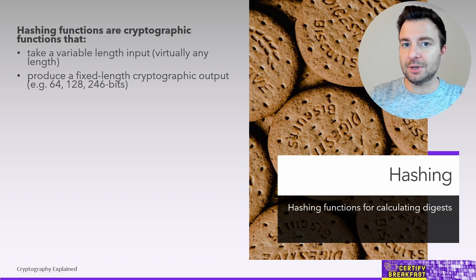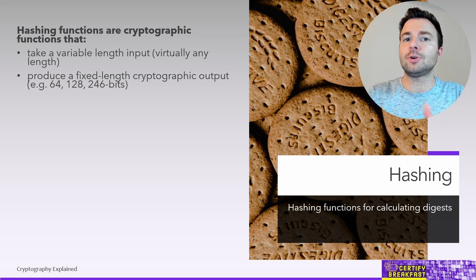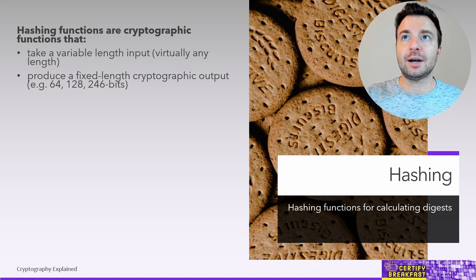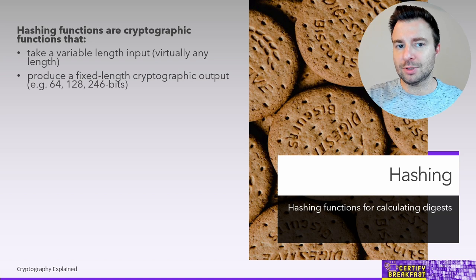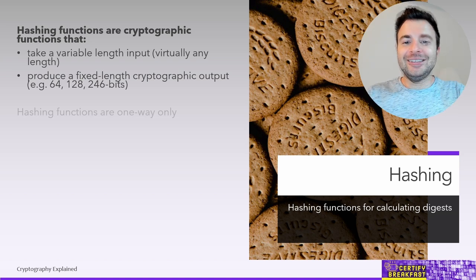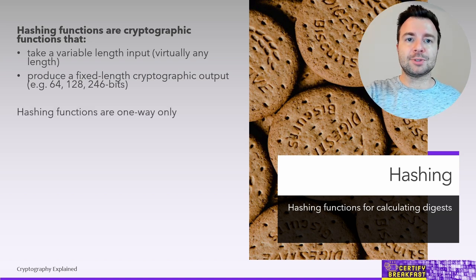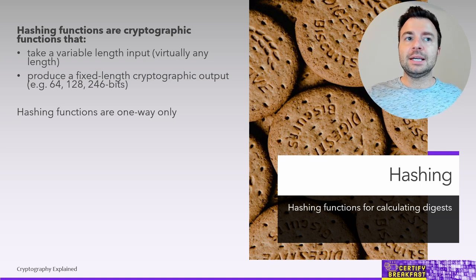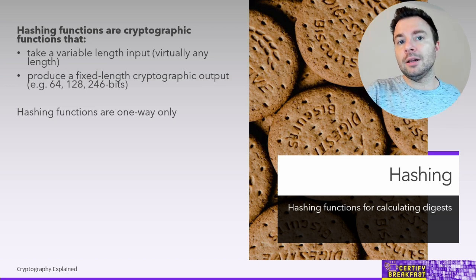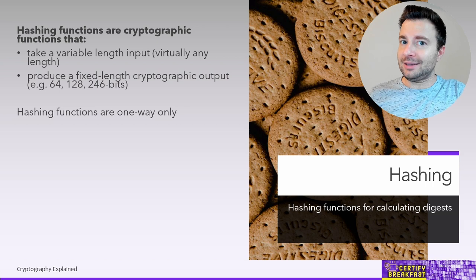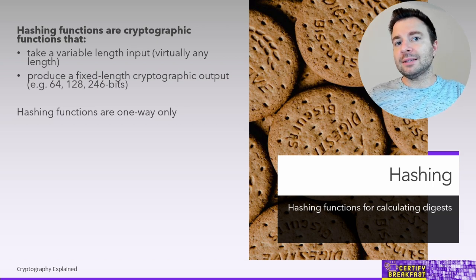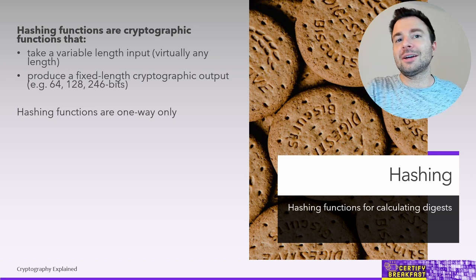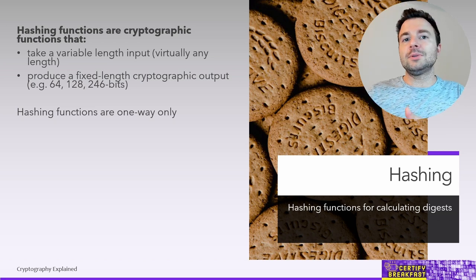That fixed length depends on the algorithm being used. It can be 64 bits, 128, or 256 bits in length, and so on. Since we can take a password and generate a 64-bit output string, and also take a 10 GB video file and output a 64-bit string, it's obvious we won't be able to reverse this operation — otherwise we'd be able to obtain the original 10 GB file from 64 bits of output, which is mathematically impossible. This makes hashing functions one-way only.